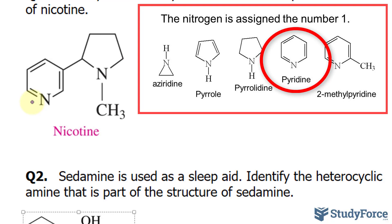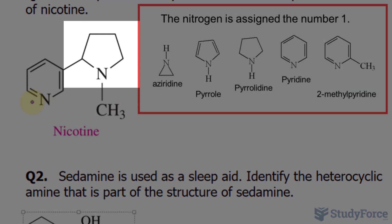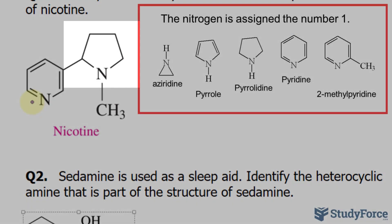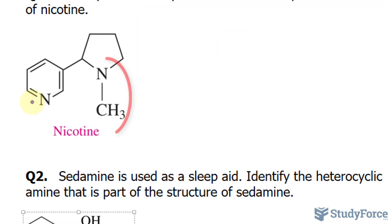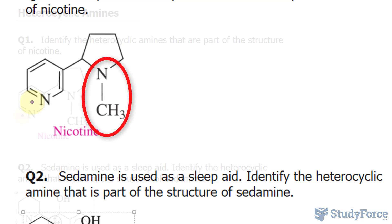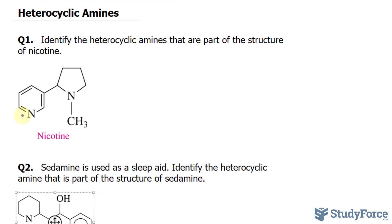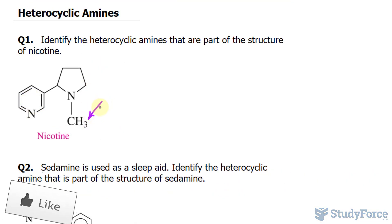The one on the right, on the other hand, is a five-atom ring, and there are no double bonds, so it is referred to as pyrrolidine. Normally in pyrrolidine, nitrogen is bonded to hydrogen, except here it's bonded to a methyl group. So this part is the methyl.